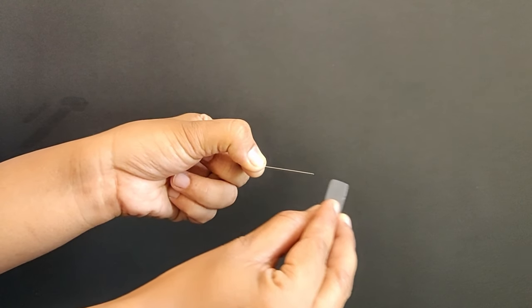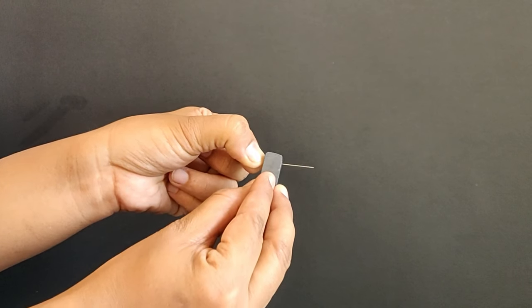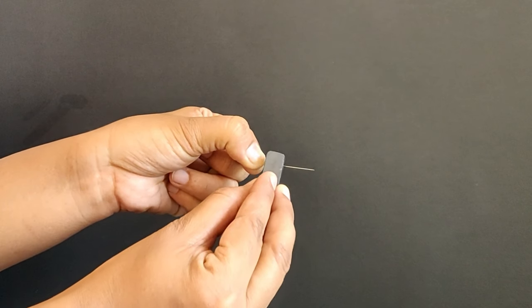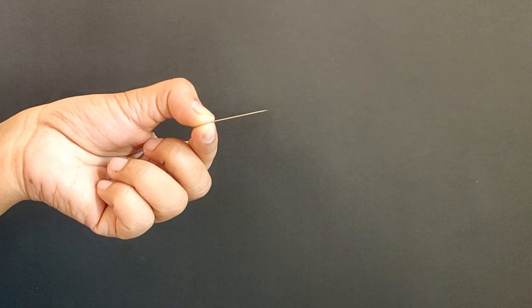Do not rub the needle back and forth with the bar magnet. Repeat this at least 30 times to magnetize the needle.